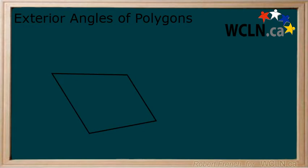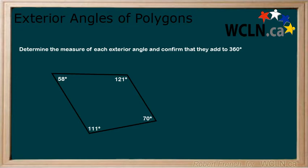Now give this a try on the following polygon with interior angles of 70, 111, 58, and 121 degrees. Determine the measure of each exterior angle and confirm that they all add to 360 degrees. Pause the video and press play when you are ready.